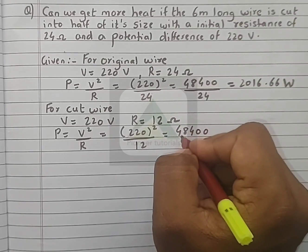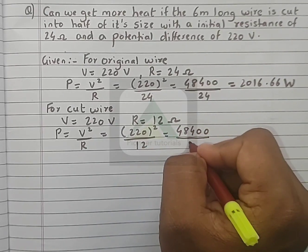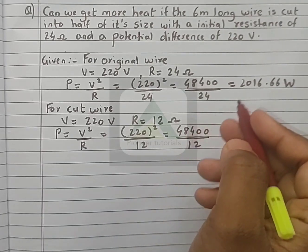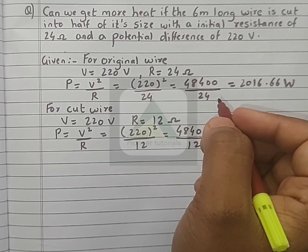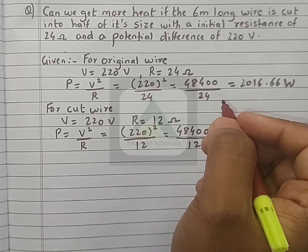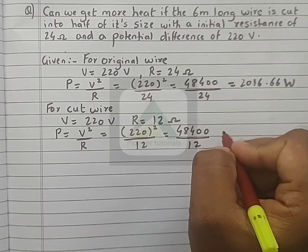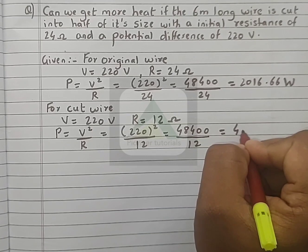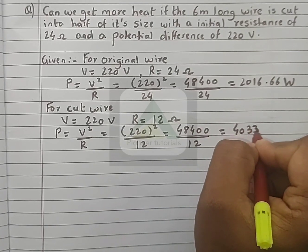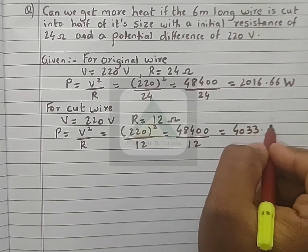When divided by 12, you will get 4033.33 watts.